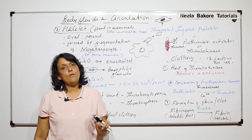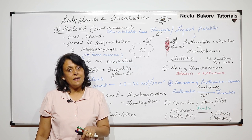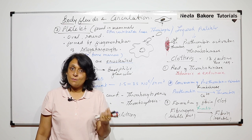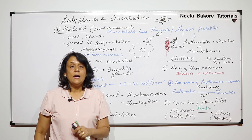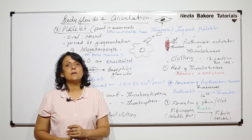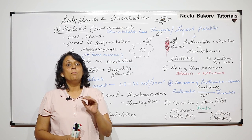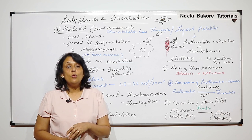So now we have three formed elements and plasma in the blood. In the next lecture, we will talk about blood groups.